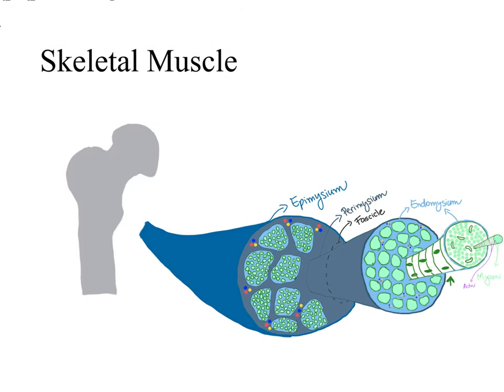So we have the endomysium wrapping around every single skeletal muscle cell. That's easy to remember because the root endo means within, so the endomysium is the most inside one. Then we have the perimysium at the periphery of the fascicle, which is a group of skeletal muscle cells. And the epimysium is the most outside layer wrapping around a skeletal muscle — very easy to remember because epi makes a reference to the epidermis, which is the most outside layer in our skin.